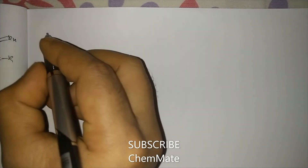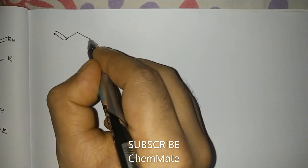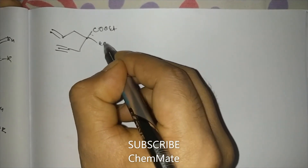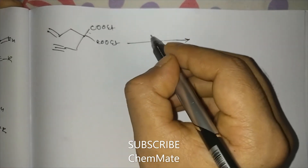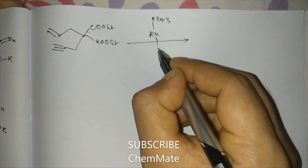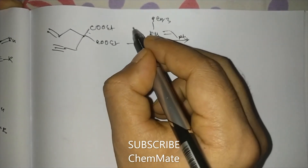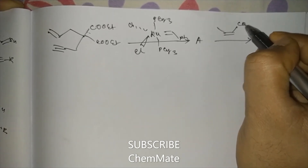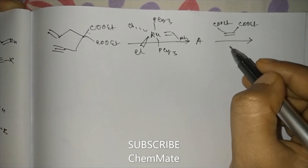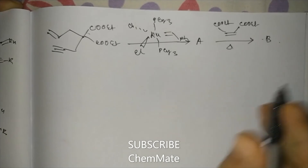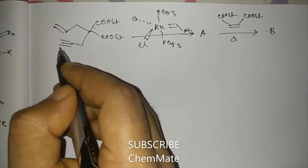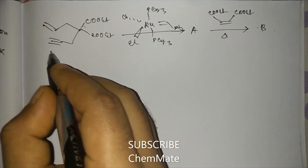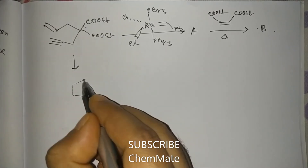Another question came in December 2016 CSIR UGC NET exam. This compound was treated with Grubbs catalyst to form product A, which was then treated with a diester to form product B. As you can see, this compound has a double bond and triple bond, so the product will come from an enine metathesis reaction. From enine metathesis, the product will be a five-member ring.